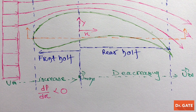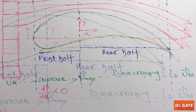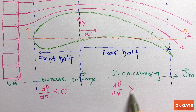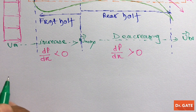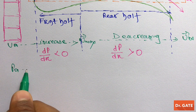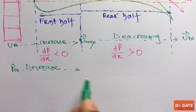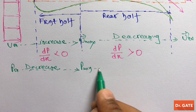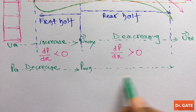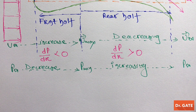This is the x-y coordinate. Applying Bernoulli's equation between any two streamlines on the rear half of the aerofoil, we get that dp/dx is greater than 0. Summarizing our conclusion: pressure here is p-infinity, and as we move along the flow we get a decrease in pressure. Pressure here is minimum. Moving further along the flow, pressure starts increasing and becomes p-infinity again.